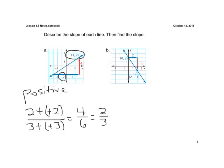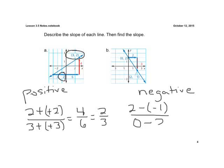For our second line, it falls from left to right, so we say that is a negative slope. Using the same formula with the top point as y₂: 2 minus negative 1 for the change in y, over 0 minus 2 for the change in x. That gives us 3 over negative 2, which is negative 3/2. It's a negative number, confirming a negative slope.